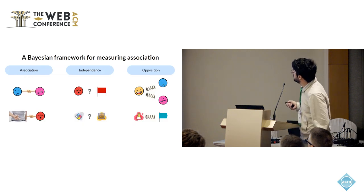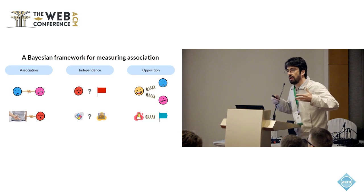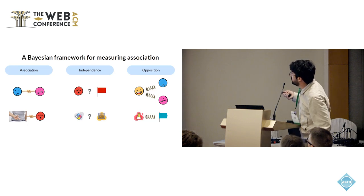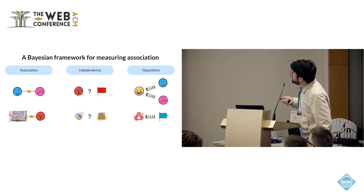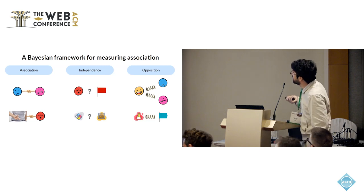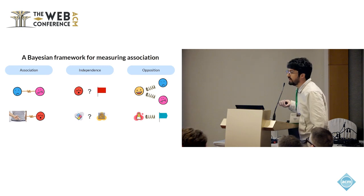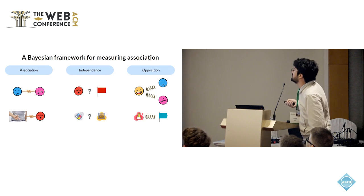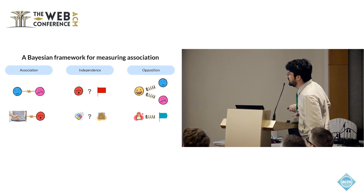You can have a situation where two emotions are associated with each other — so when you detect one emotion, it is usually the case that you also detect the other one — or you can have a certain emotion related to misinformation. You can also have independence between these two categorical variables, meaning they appear together at the same rate you would expect by chance. Or you can have opposition, where finding one emotion reduces the chance of finding the other.